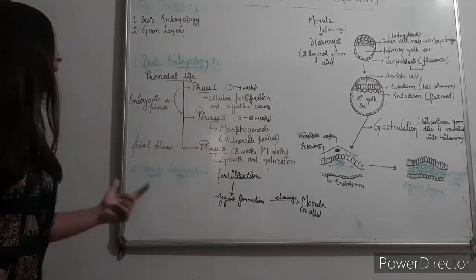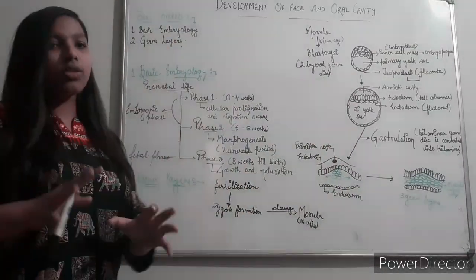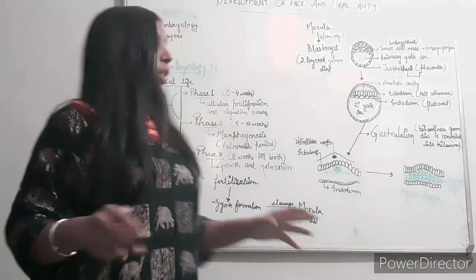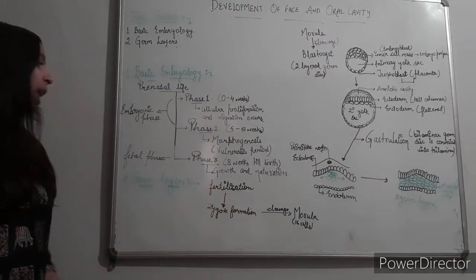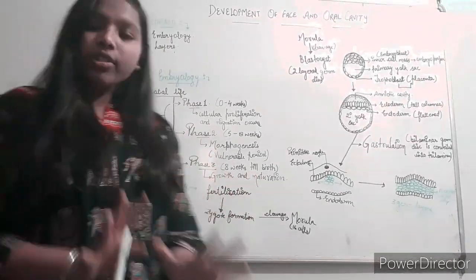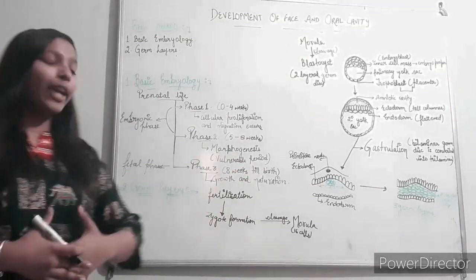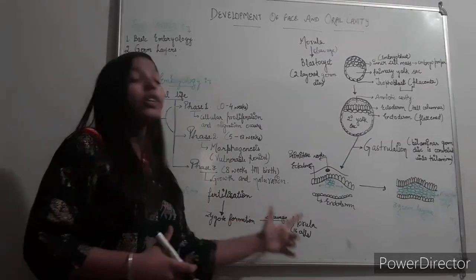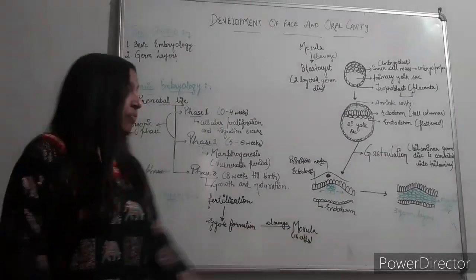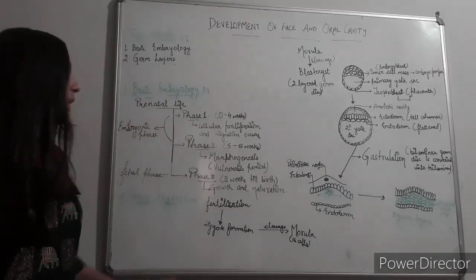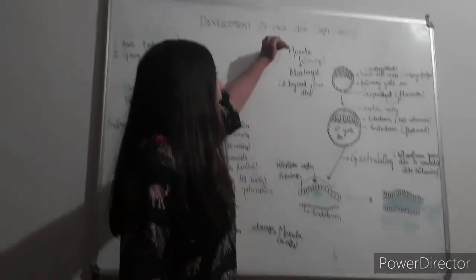Now we'll discuss germ layers. Germ layers are the structures which will develop the whole embryo. First of all, fertilization takes place. At the time of fertilization, zygote formation occurs. After zygote is formed, then cleavage takes place. With the cleavage, the single cell zygote will convert into sixteen cell structures, which is known as morula.